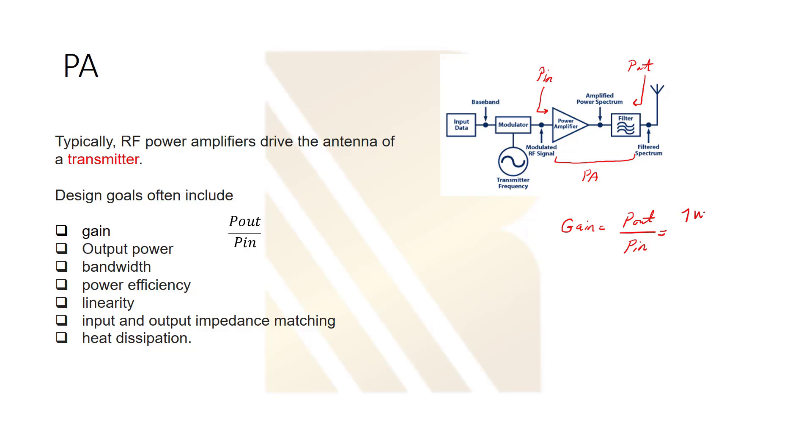So, when we have, for example, 1 Watt at the output, and 0.1 Watt, so our gain is 10 for this amplifier. The other thing is output power is the same as POUT, and it's important sometimes, and actually, it depends on our application. Sometimes, we need to send out 1 Watt. Sometimes, we need to send less or more than 1 Watt.